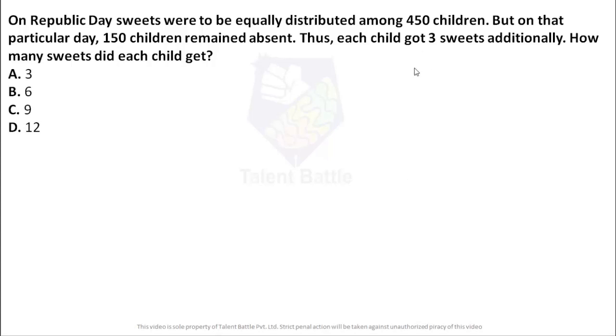This particular question was asked by Ritika from College of Engineering and Management Kolagart. Just check the question. On Republic Day sweets were equally distributed among 450 children. But on that particular day 150 children remained absent. Thus each child got three sweets additionally. How many sweets did each child get? So ultimately we need to calculate how many sweets each children or child is getting.